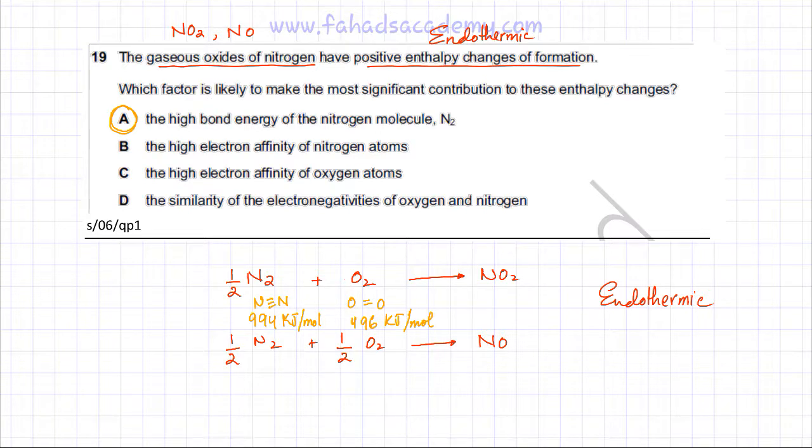So the reason why the overall enthalpy changes for these reactions are highly endothermic is because it requires a lot of energy to break the N triple bond N in both molecules. Hence option A is going to be the correct option for this question.